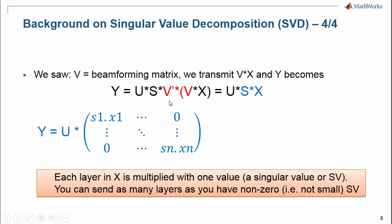Using V as a beamformer results in each layer being multiplied by a singular value at the receiver, ignoring the multiplication with unitary matrix U.